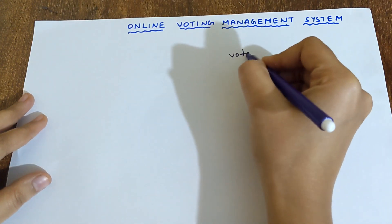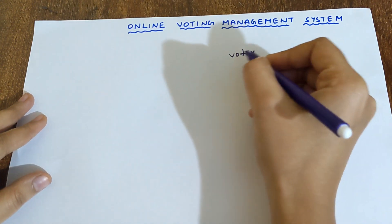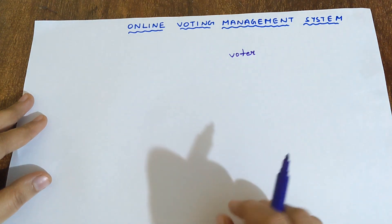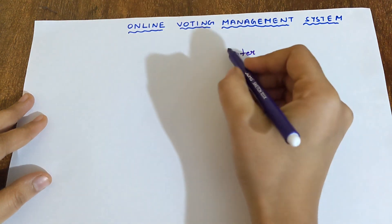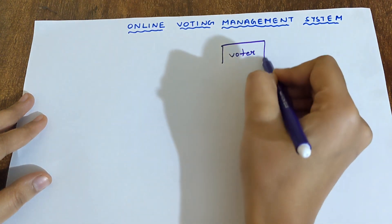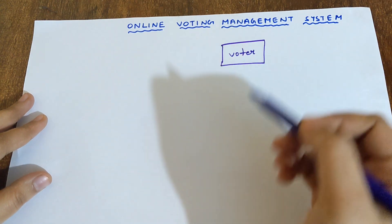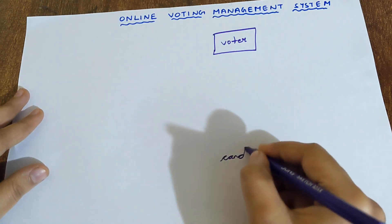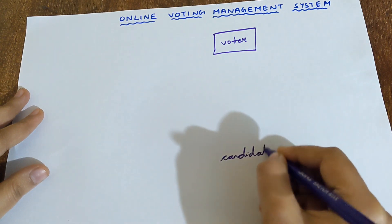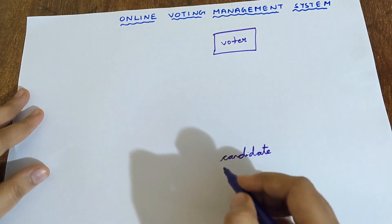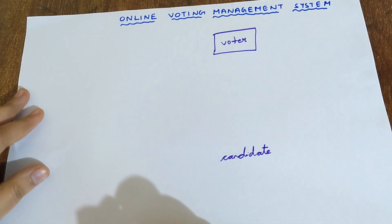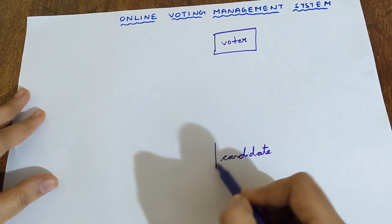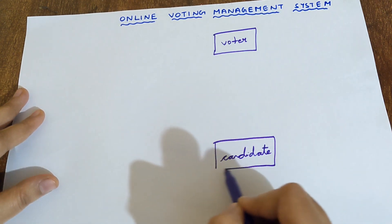Voter is an entity because a Voter is a person, and a person is physically existing. Therefore, Voter is an entity. An entity must be written inside a rectangular box. Candidate is again a person, so a person is physically existing. Therefore, Candidate is an entity, and must be written inside a rectangular box.